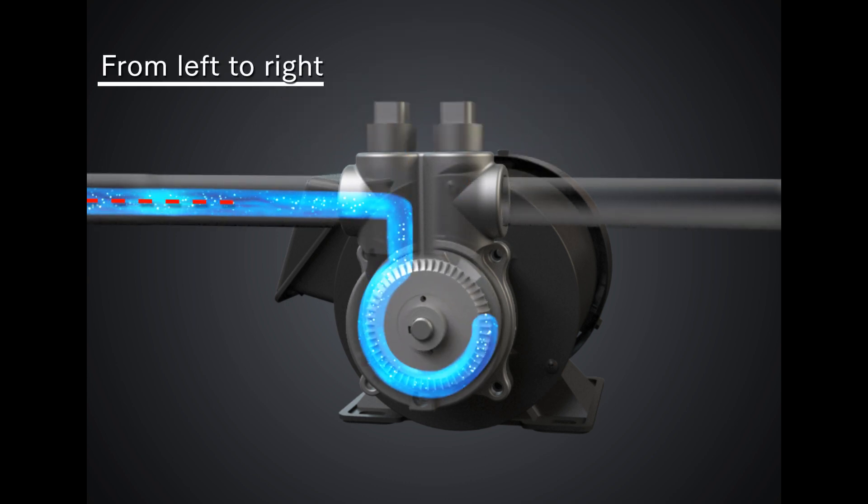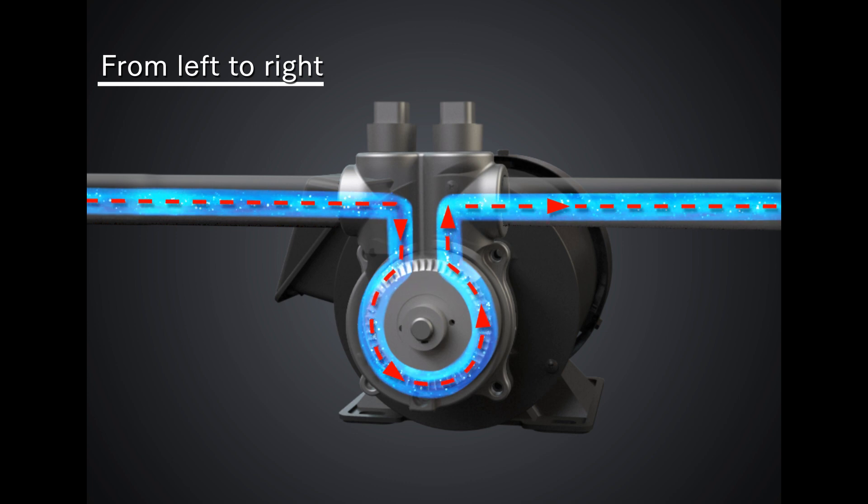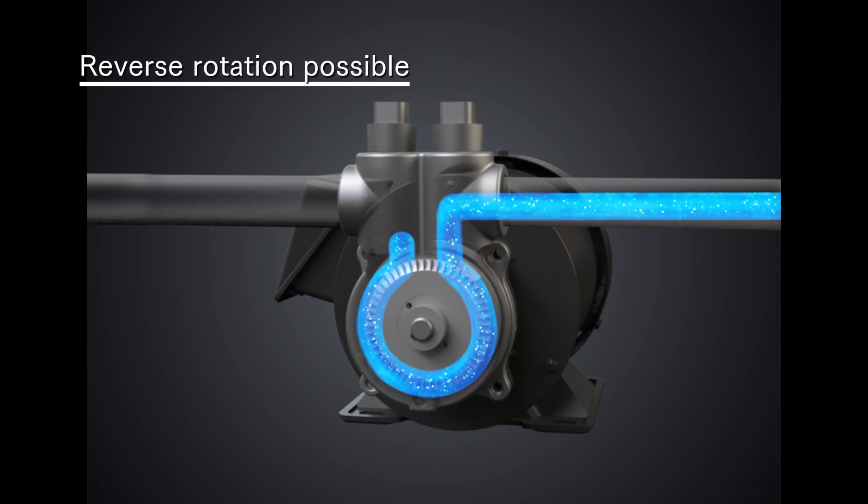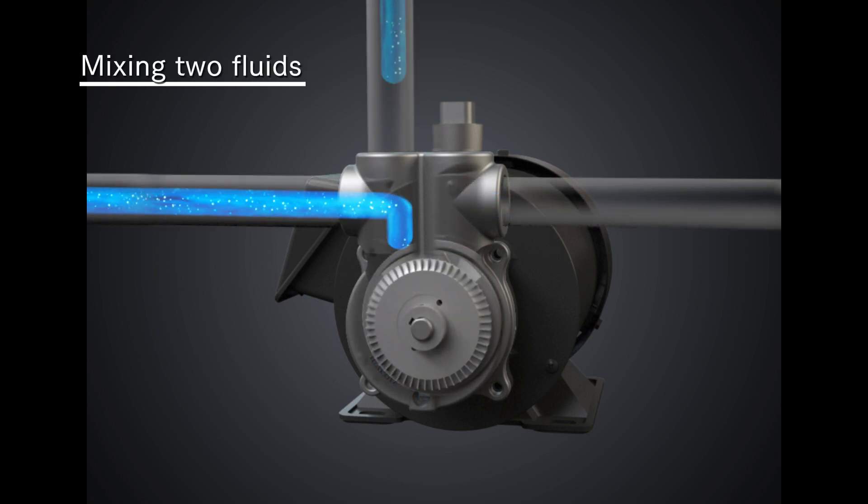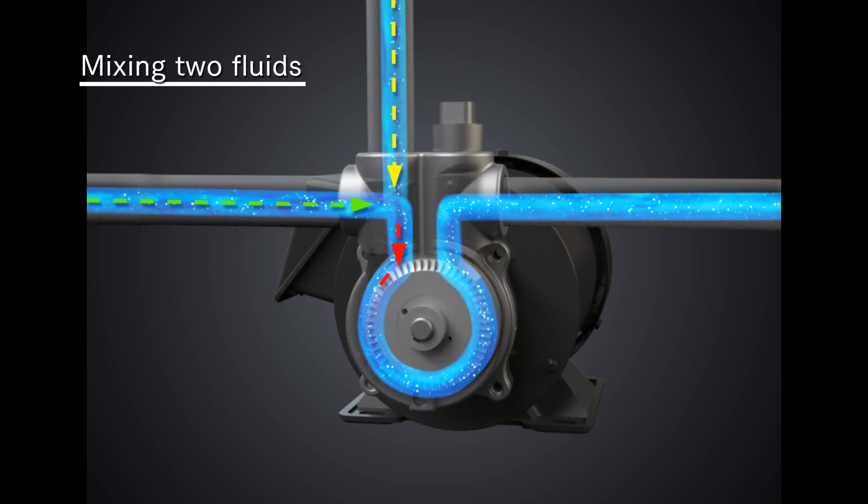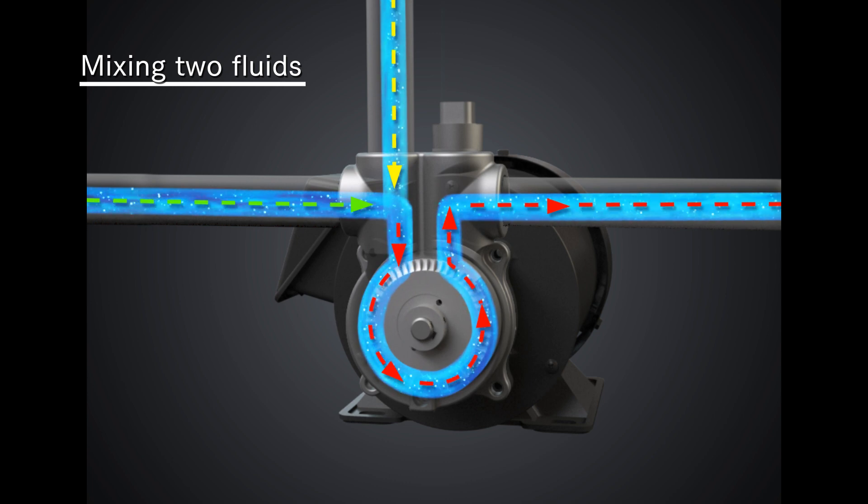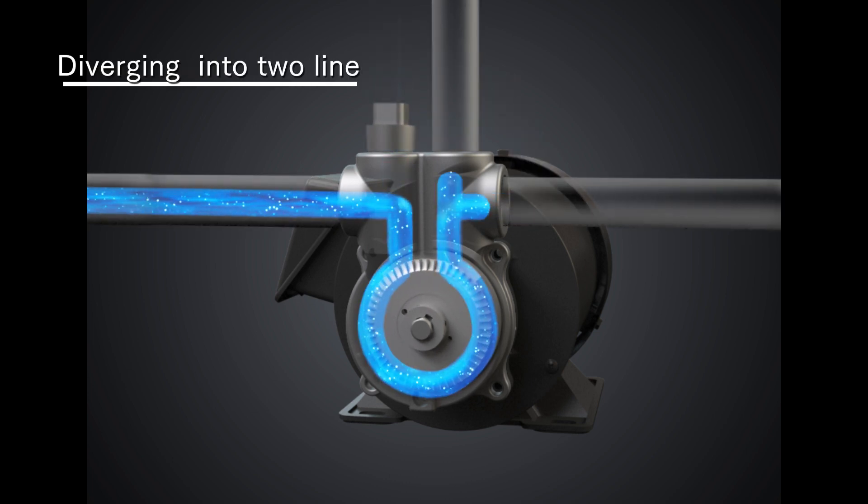The impeller can be run both clockwise and counterclockwise, maintaining the same level of performance even when running the pump in the reverse flow direction. In addition, these two inlets and two outlets allow the pump to mix two separate liquids or to split one liquid into two lines.